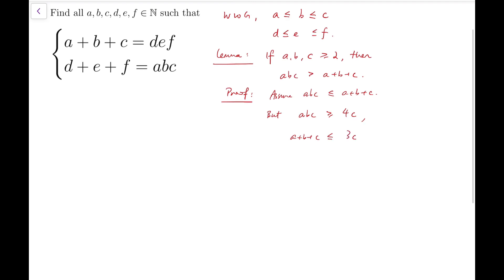Because c is the largest number. So therefore, we can say that four c is less than or equal to abc, which is less than or equal to a plus b plus c by assumption, and less than or equal to three c. So four c is less than or equal to three c, but that's clearly wrong. So contradiction.